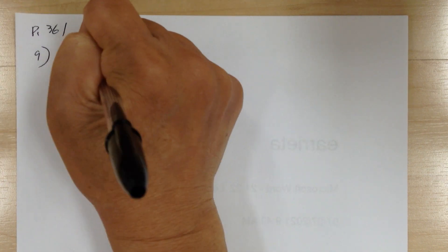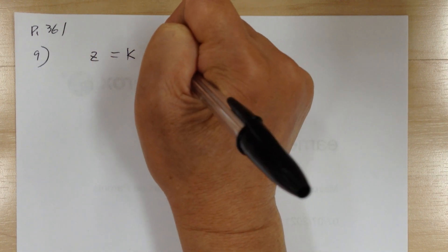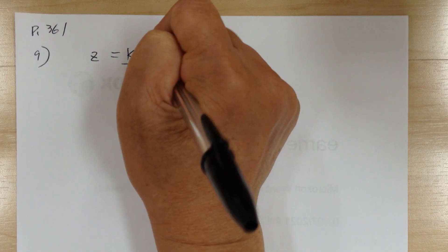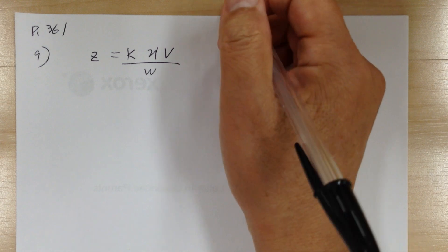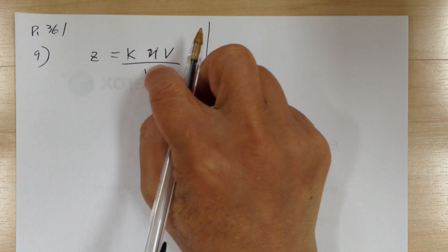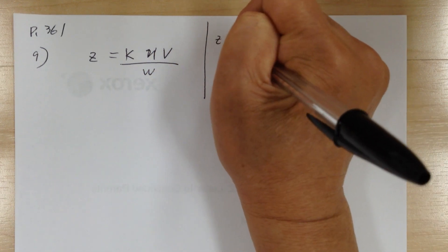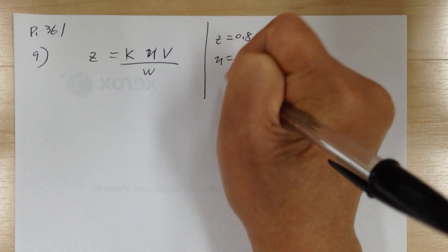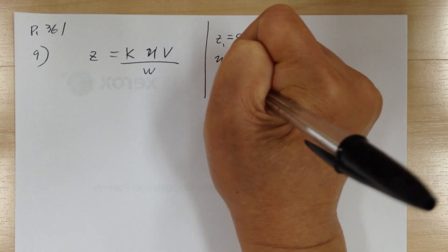Number 9: suppose z varies jointly as u and v, and inversely as w. Z equals 0.8 when u equals 8, v equals 6, and w equals 5 — that's case 1.